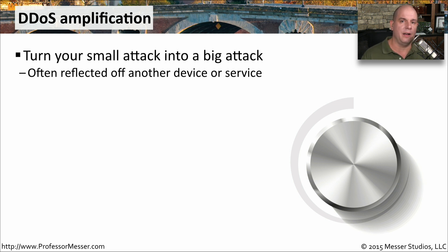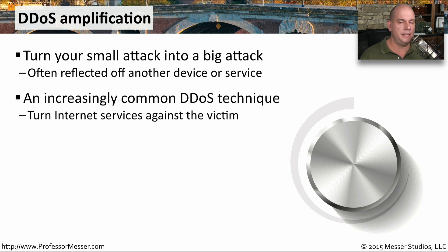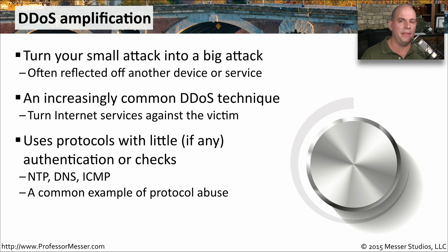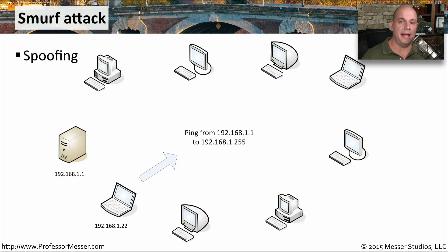Attackers often reflect the attack off of another set of services. This is increasingly common because it uses very little bandwidth for the bad guys but takes up a lot of bandwidth at the victim. They use protocols that don't have a way to authenticate or do any type of checking, such as NTP for network time protocol, DNS for domain name system, or ICMP by performing pings. A classic example is the Smurf attack, which was well-known before it was patched by operating systems.